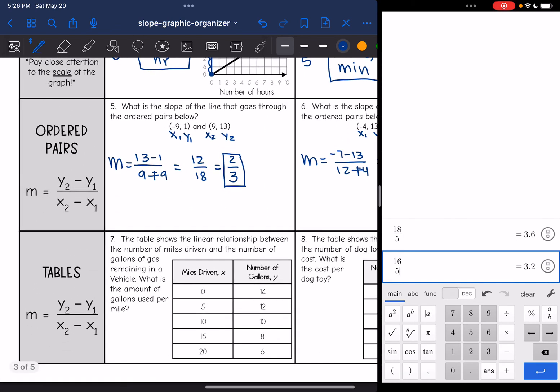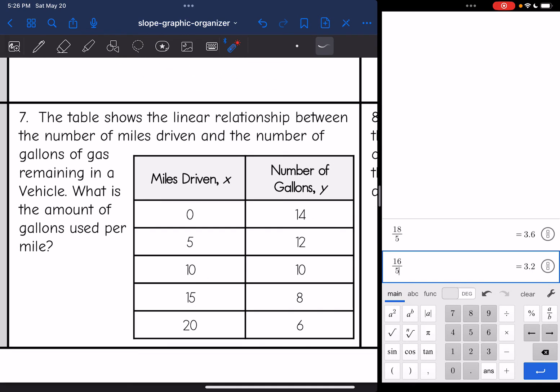Tables just show several ordered pairs, so we will do the same thing. We will use slope formula. We will just pick two points from the table to plug into slope formula. So number 7 says the table shows the linear relationship, that's how we know we can find slope because it's going to be a line, between the number of miles driven and the number of gallons of gas remaining in a vehicle. What is the amount of gallons used per mile? So I am just going to use the first two points. You can use any points on the table, but I'm going to use the first two to label as x1 and y1 and x2 and y2.